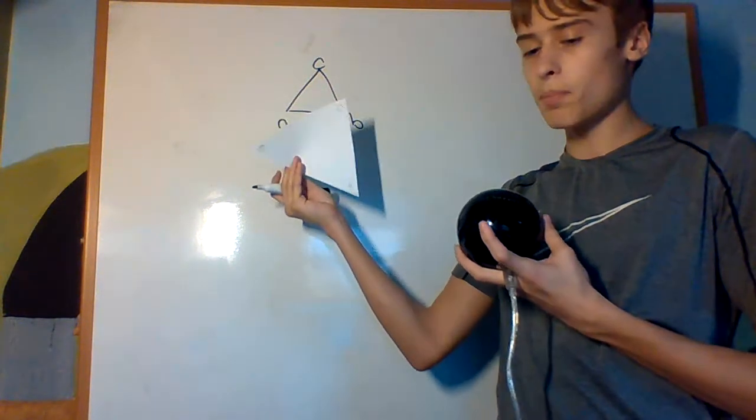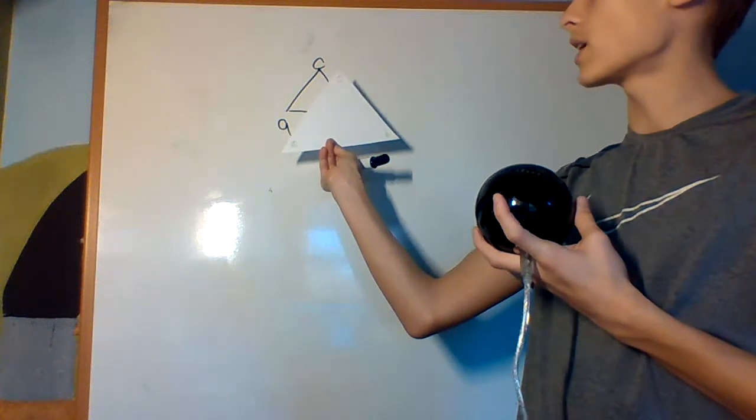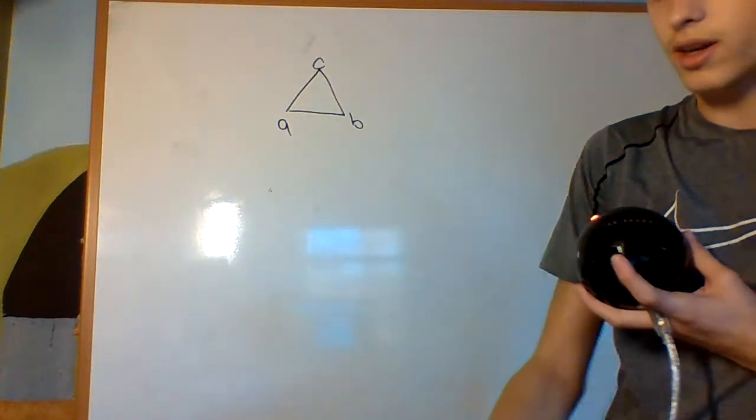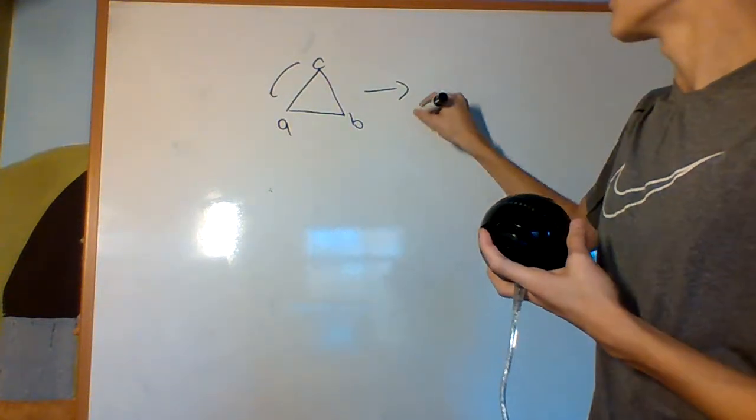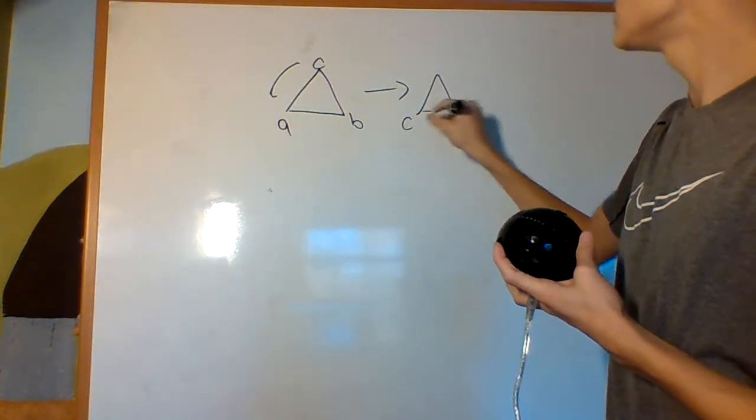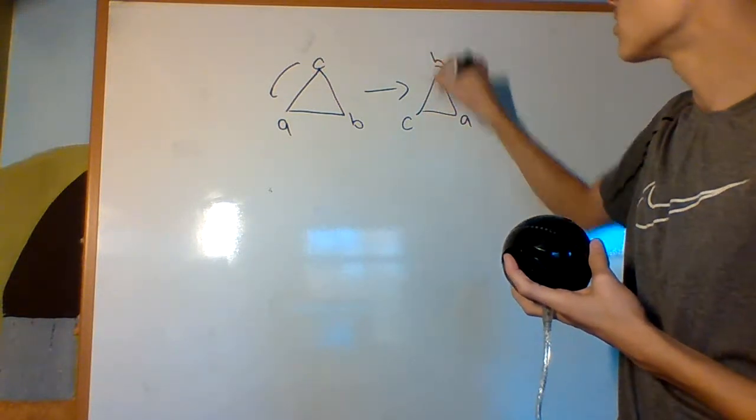And there's a couple things I can do to this triangle. I can rotate it like that, and that gives me the triangle C, A, B, right?